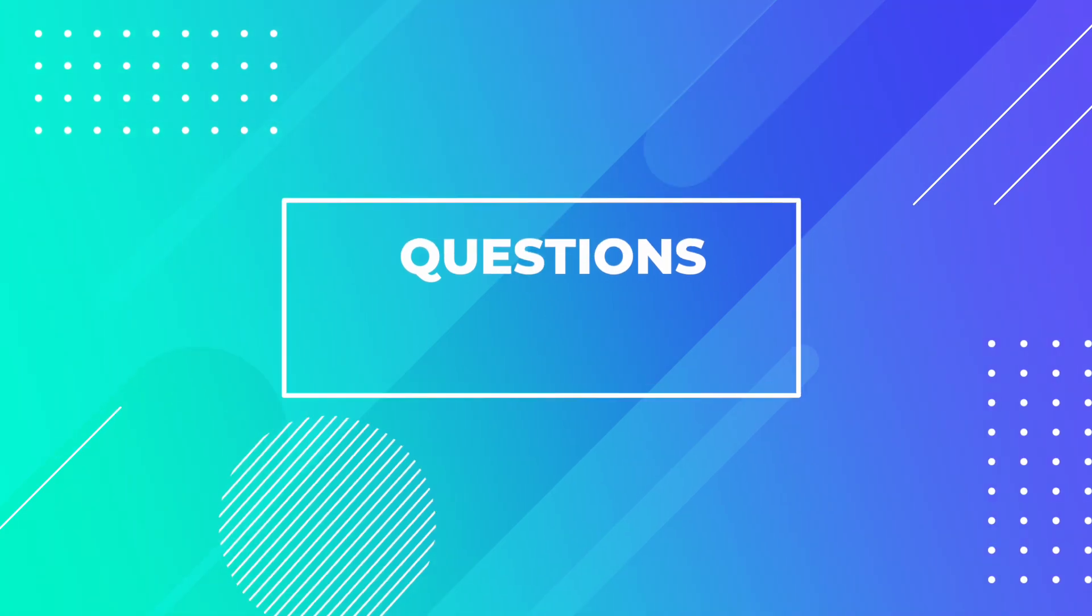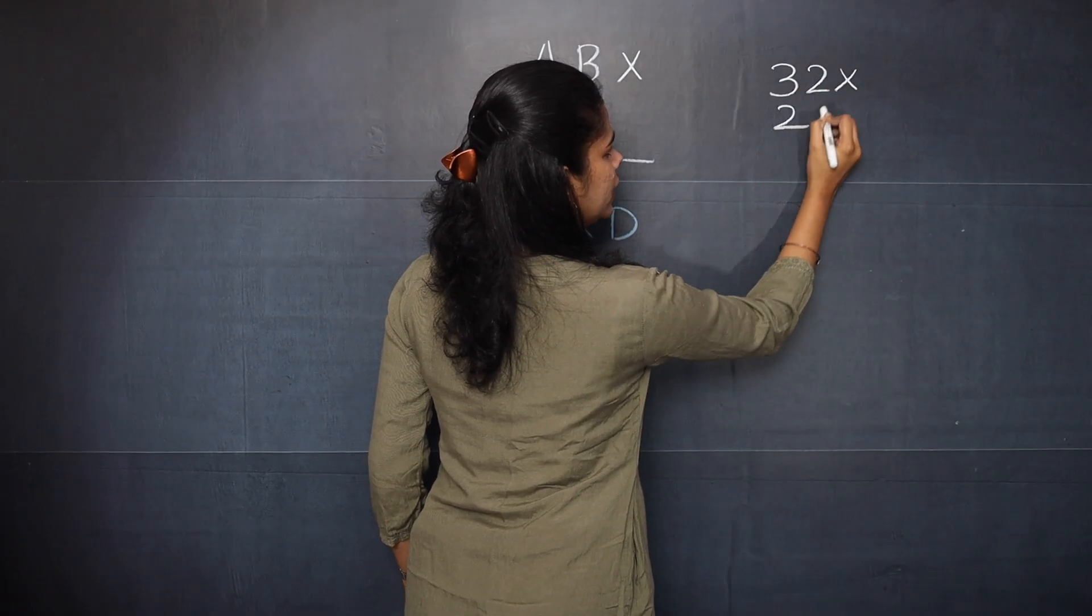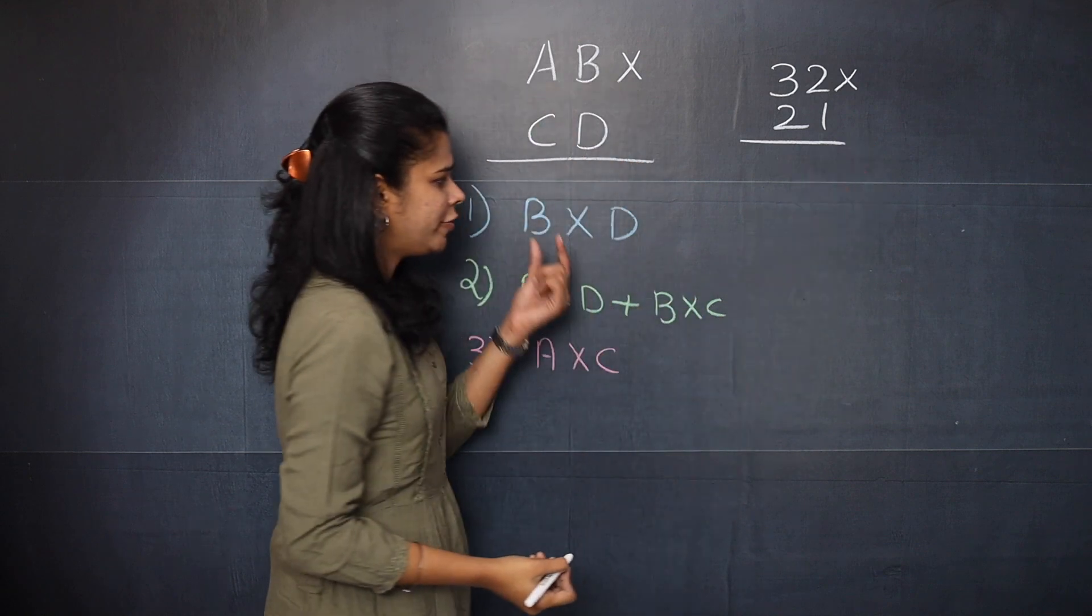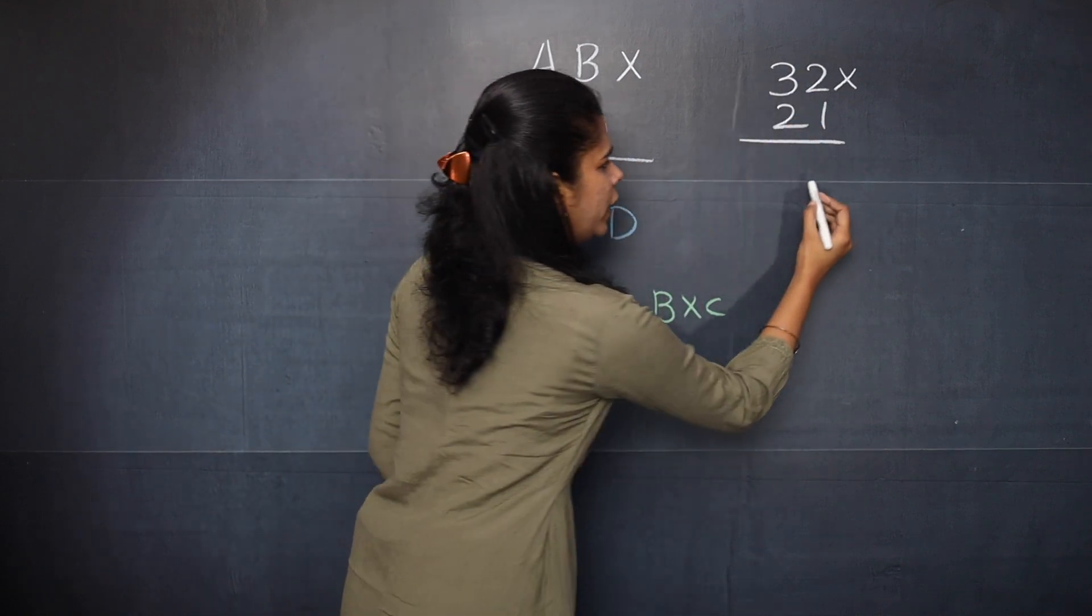Now let's see the questions and try it. So 32 multiplied by 21. So the first step is that you need to multiply 2 and 1. So you will get 2.